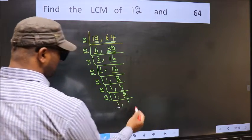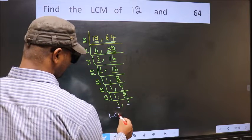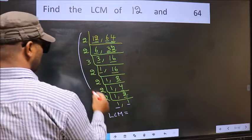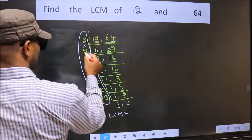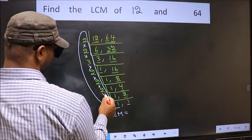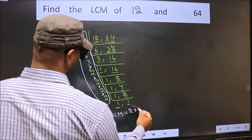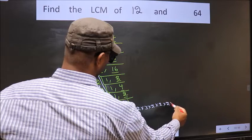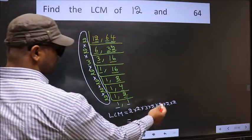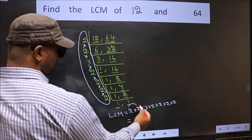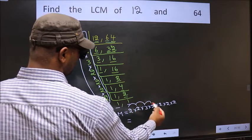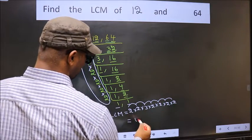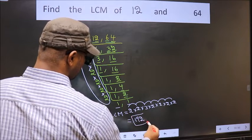We got 1 in both places, so our LCM is the product of these numbers. LCM equals 2 x 2 x 2 x 2 x 2 x 2 x 2 x 2 x 3, which gives us our LCM.